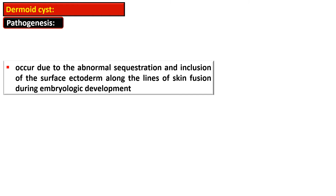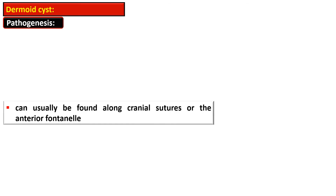Dermoid cysts occur due to abnormal sequestration and inclusion of the surface ectoderm along the lines of skin fusion during embryonic development. They can usually be found along the cranial sutures or the anterior fontanel. If they are present along the cranial suture or in the head and neck region, consultation with a neurosurgeon is essential.